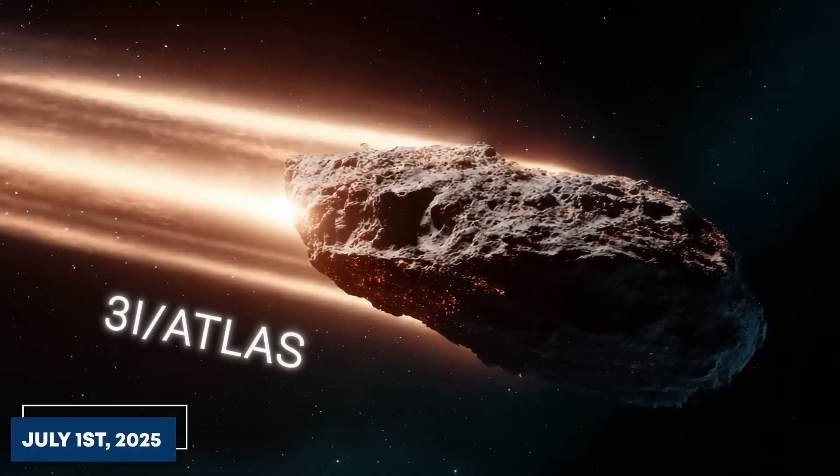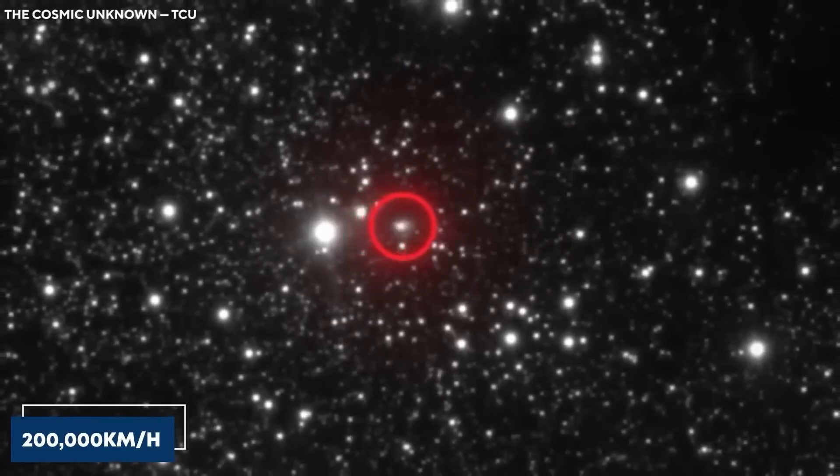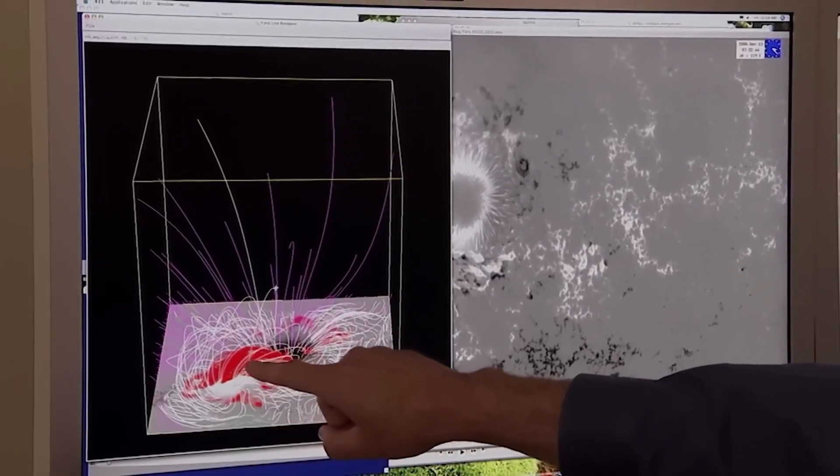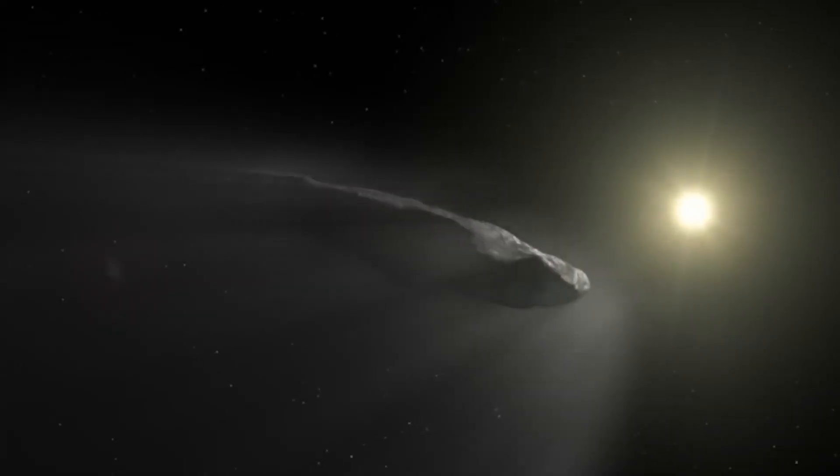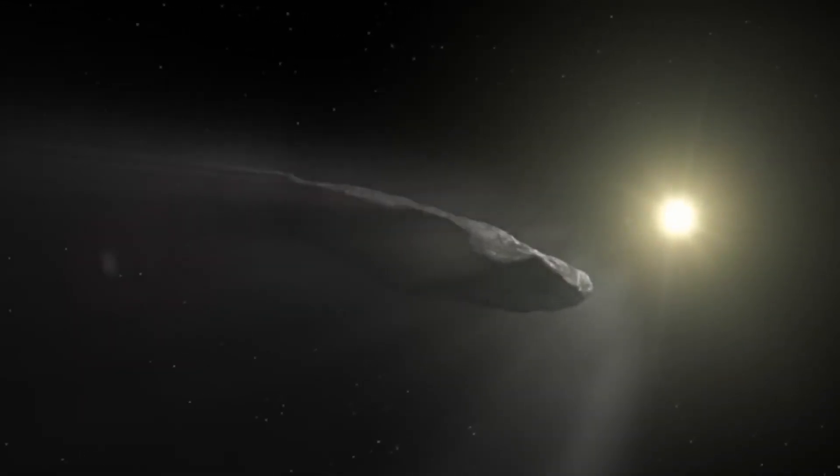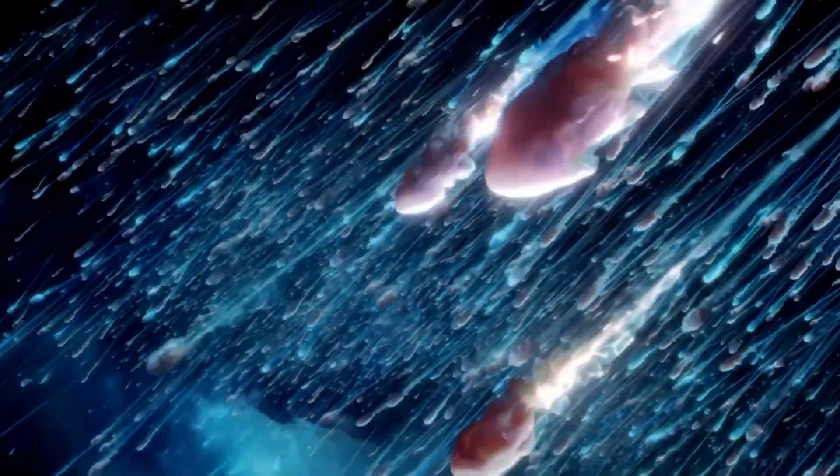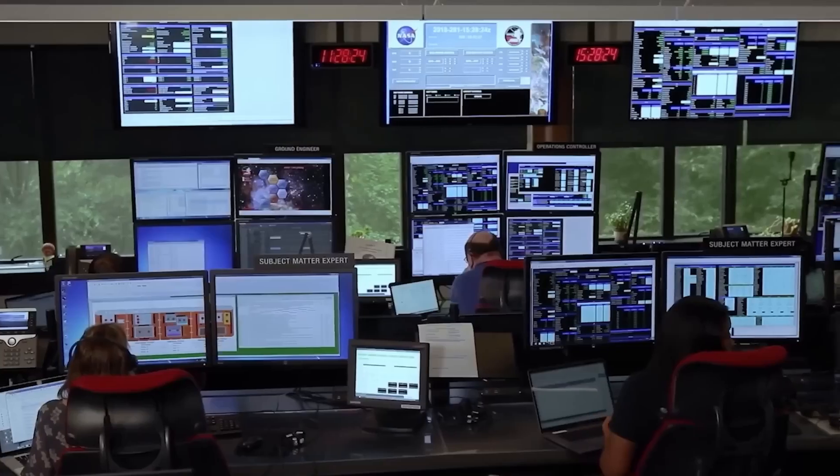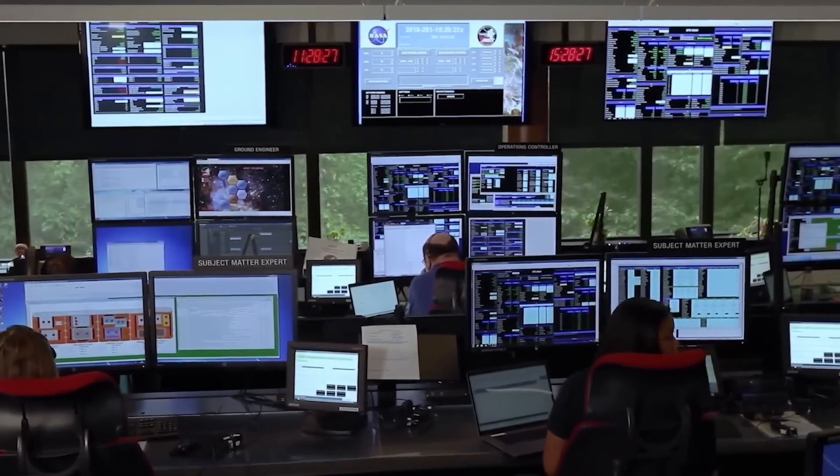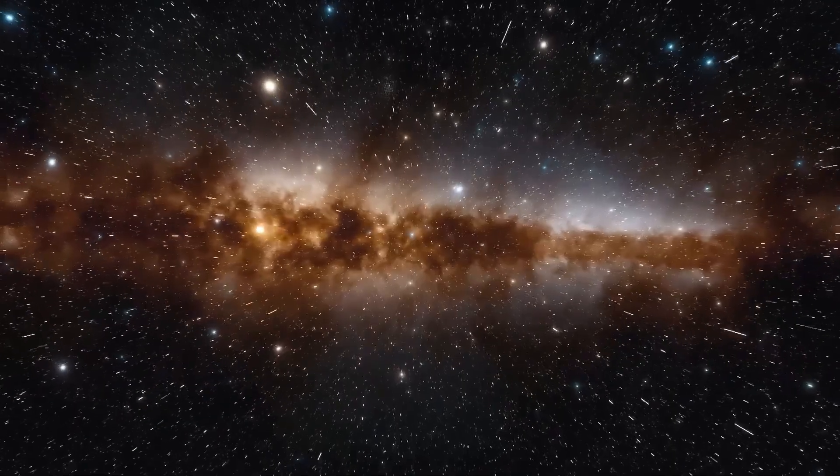And then there was the angle. Its trajectory sliced through the inner system, tilted only about five degrees from the ecliptic plane, the flat disk where planets line up and orbit. For something supposedly arriving from far away and from any direction, aligning this closely with the solar system's plane is profoundly unlikely. Statistically, it's been estimated at about two chances in a thousand. It looked less like a random passage and more like a path someone might actually choose.